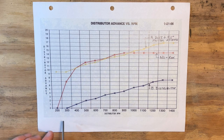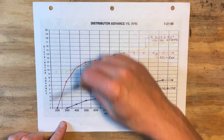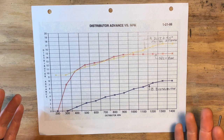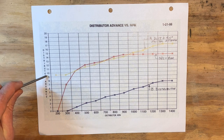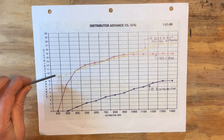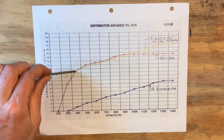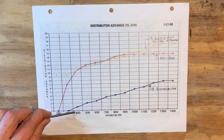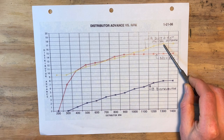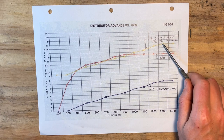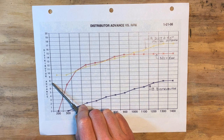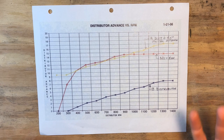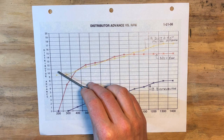Remember, what you're seeing is distributor RPM and distributor advance. The distributor spins at half the speed of the crankshaft, so you have to double these numbers. So 19 degrees — what you're seeing here is 9.5 before top dead center — is where you start. That's your initial timing. The mechanical advance kicks in around 800 crankshaft RPM and is all in around 2,600 RPM.